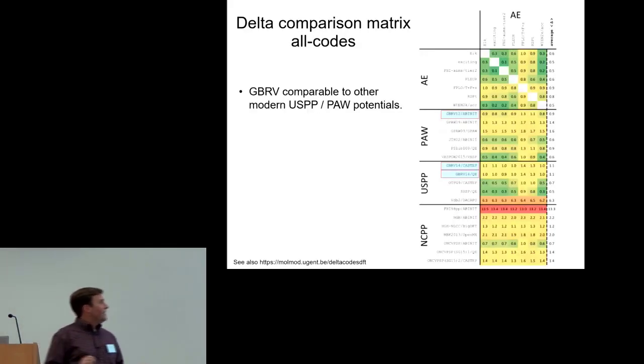This is a summary of the delta test. I've highlighted the GBRV results with three different codes. You can see they're largely comparable to other ultra soft PAW libraries.